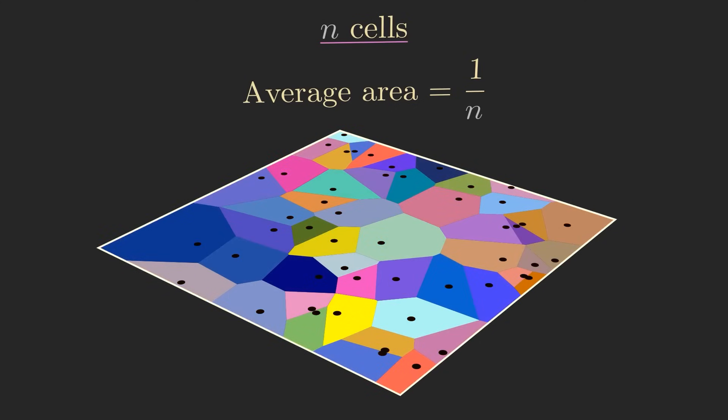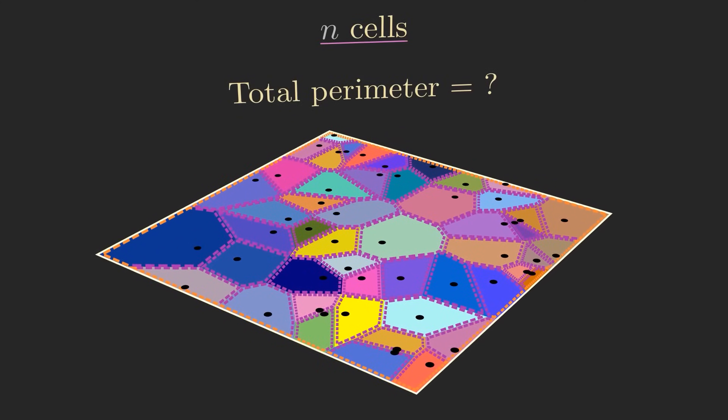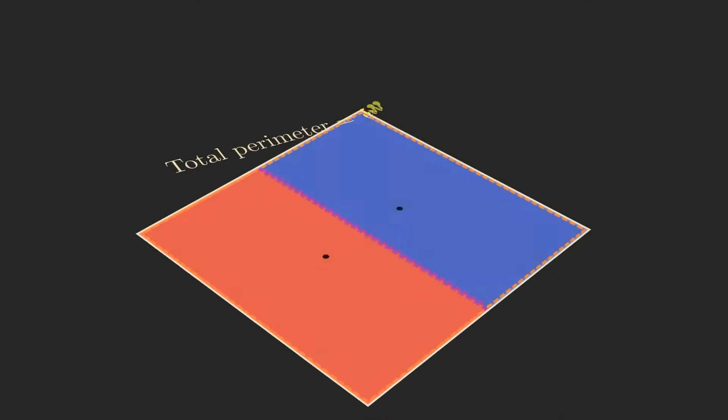But it's hard to find an analogous argument for the perimeters, since we don't know for sure what the total perimeter of all the Voronoi cells is. For example,